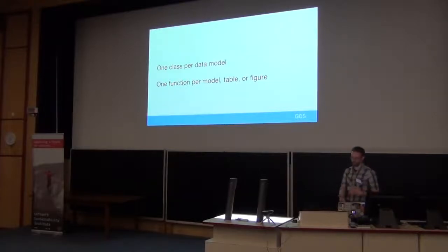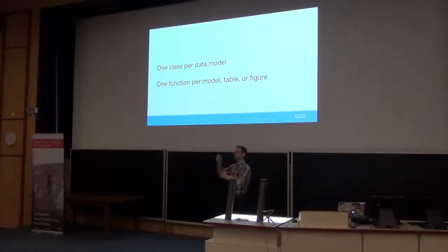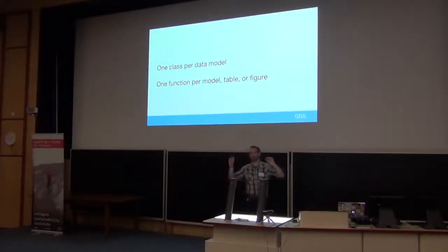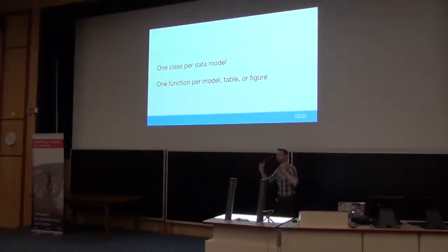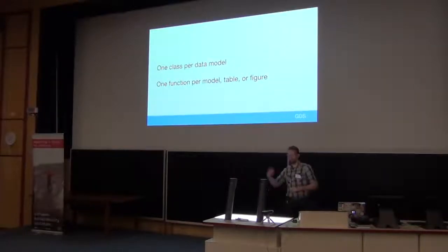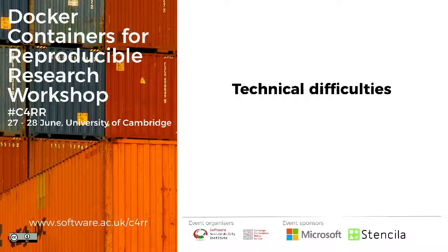The idea is that we build classes and functions and make it proper software - not scripts. That's something we have to work with partners in other government departments on, because often when they think of coding they think of a long list of instructions in one file. We build classes for each data model and then one function for every particular thing or group of things, using arguments to deal with different cases. It's all built properly: we use continuous integration, test it on Windows, Linux, and Mac, use code coverage, and version it - so it becomes very easy to say what was the 2016 version like versus 2015.